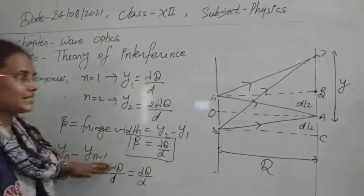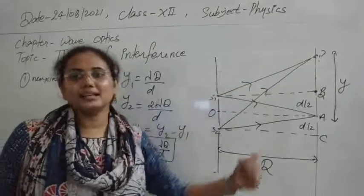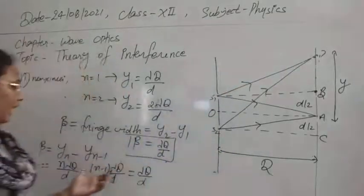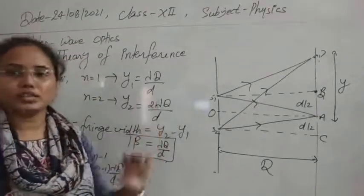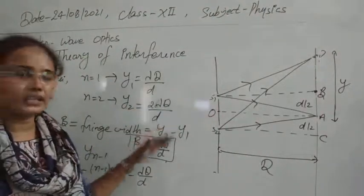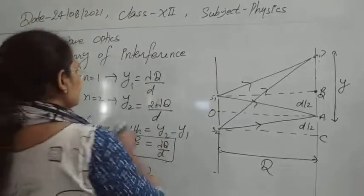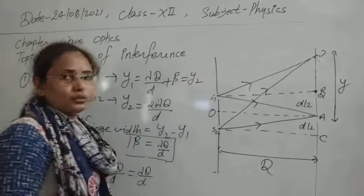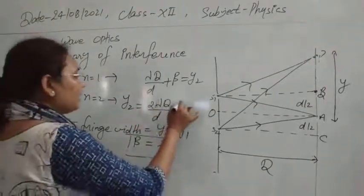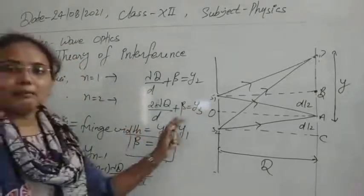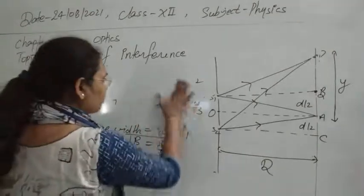Enforcing the maximum condition, you can find the exact location of any maximum intensity point. Once you have the first maxima location, you can directly add the fringe separation beta to obtain the location of the second maxima, then add beta again for Y3, and so on. Beta equals lambda D by d, so Y2 equals 2 lambda D by d, Y3 equals 3 lambda D by d. This is a very easy marker to understand the location of bright or dark points.